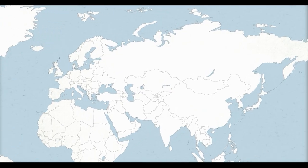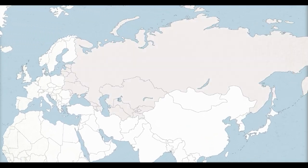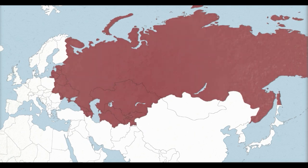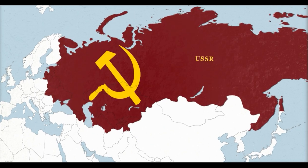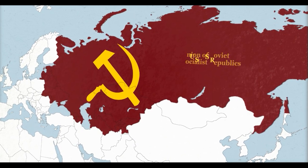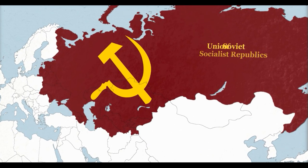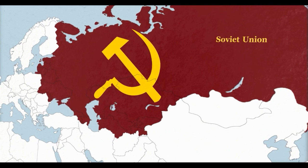For almost 70 years during the 20th century, Eastern Europe, Central Asia and modern-day Russia all made up one global power: the Union of Soviet Socialist Republics, also known as the Soviet Union.